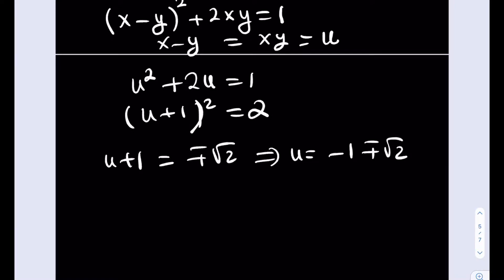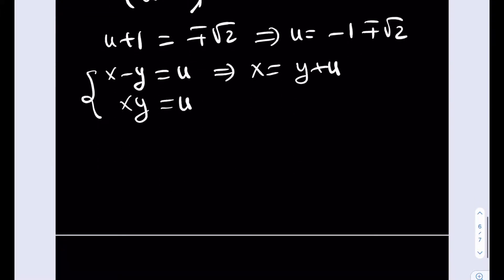Now, what's the significance of u here? Well, you can actually do the following. If we know that x minus y equals u and xy equals u, we can actually solve this as a system as well. Right? Let's do that first. So I'm going to replace x with y plus u and substitute that into the second equation.